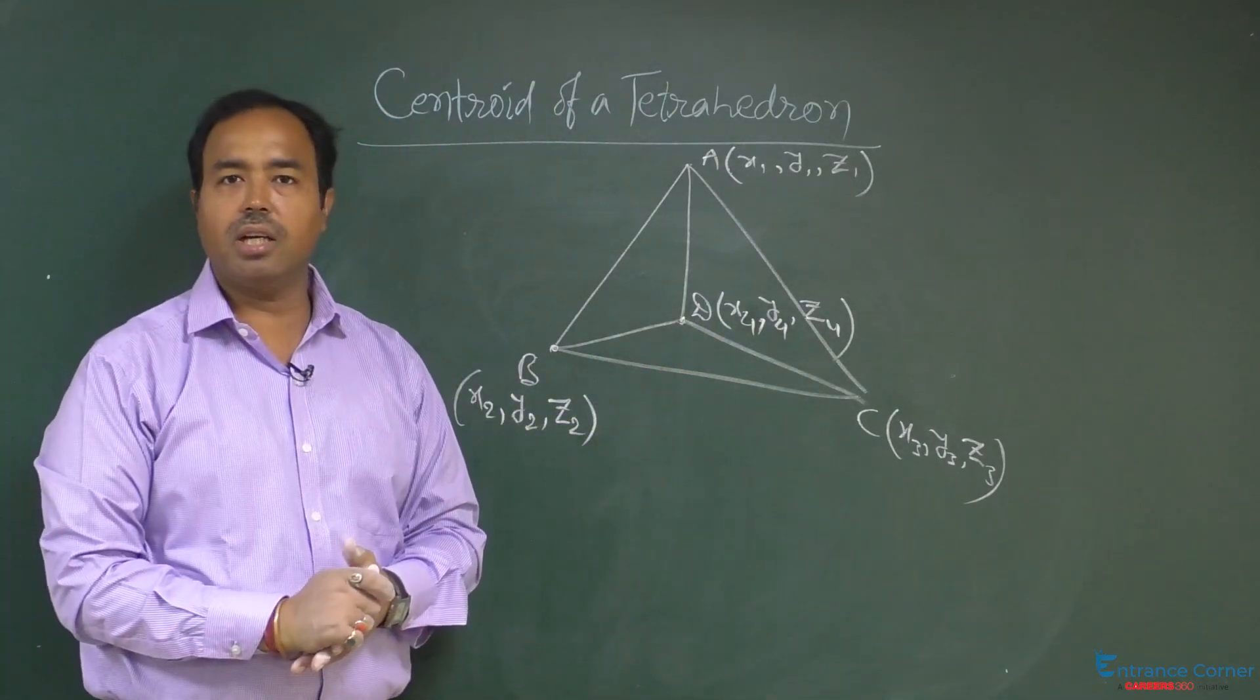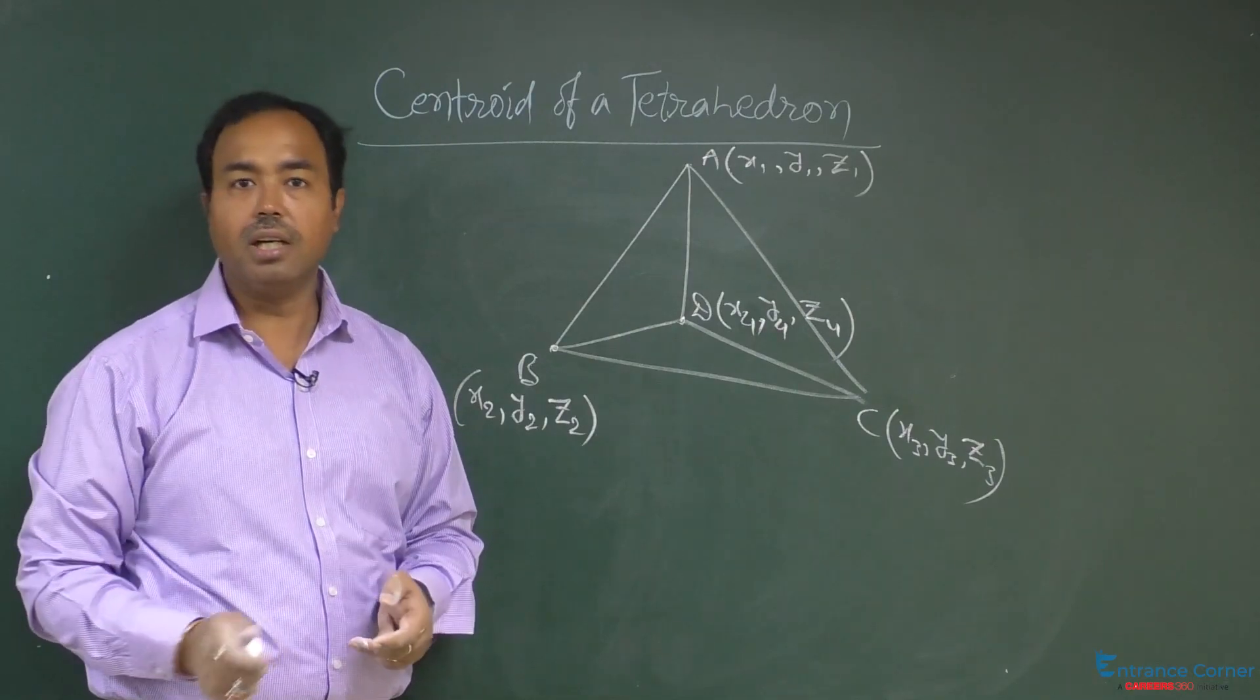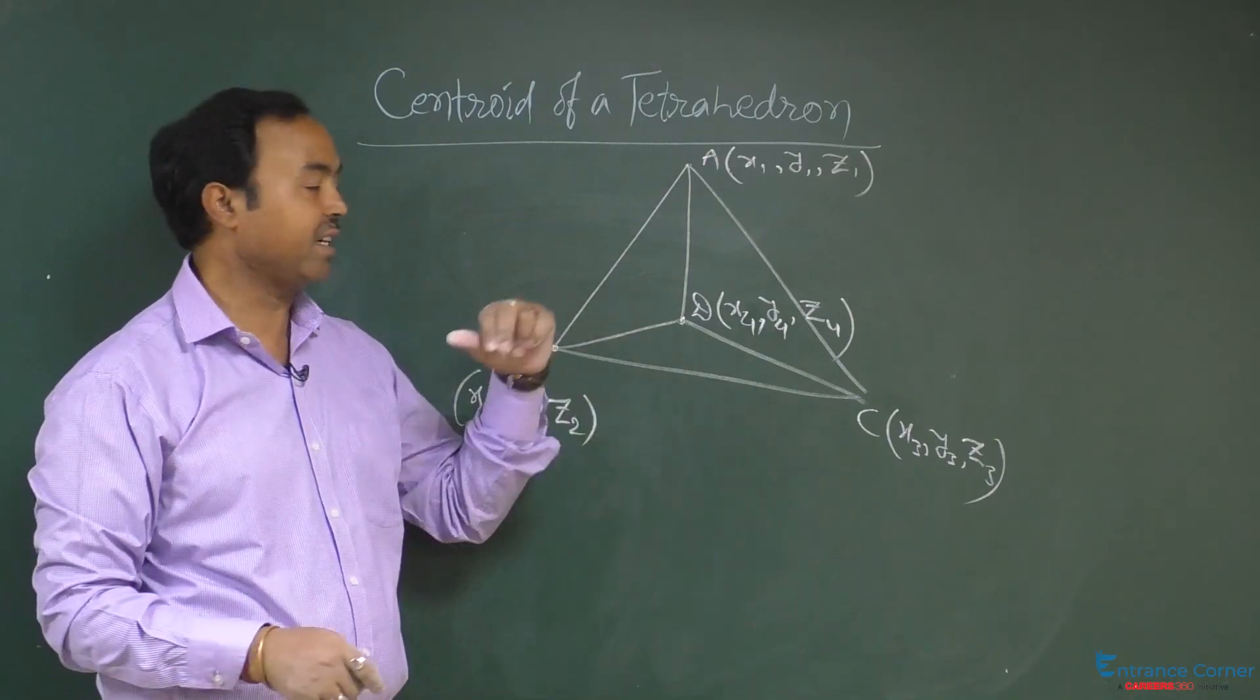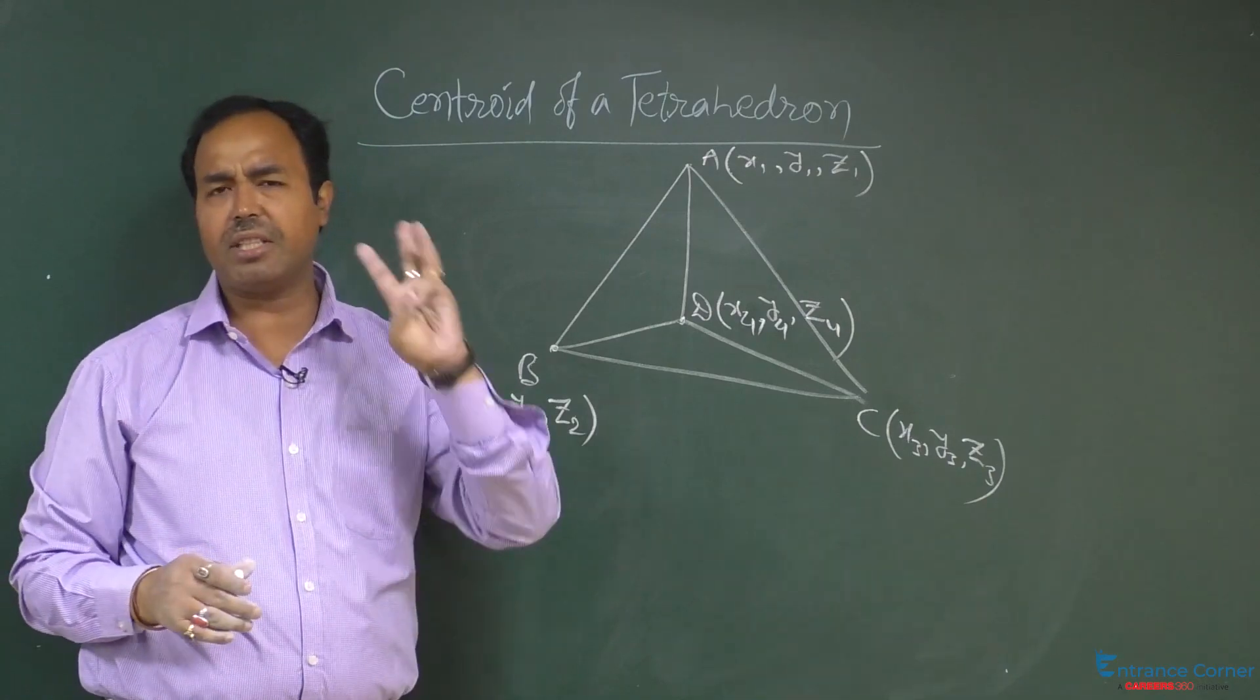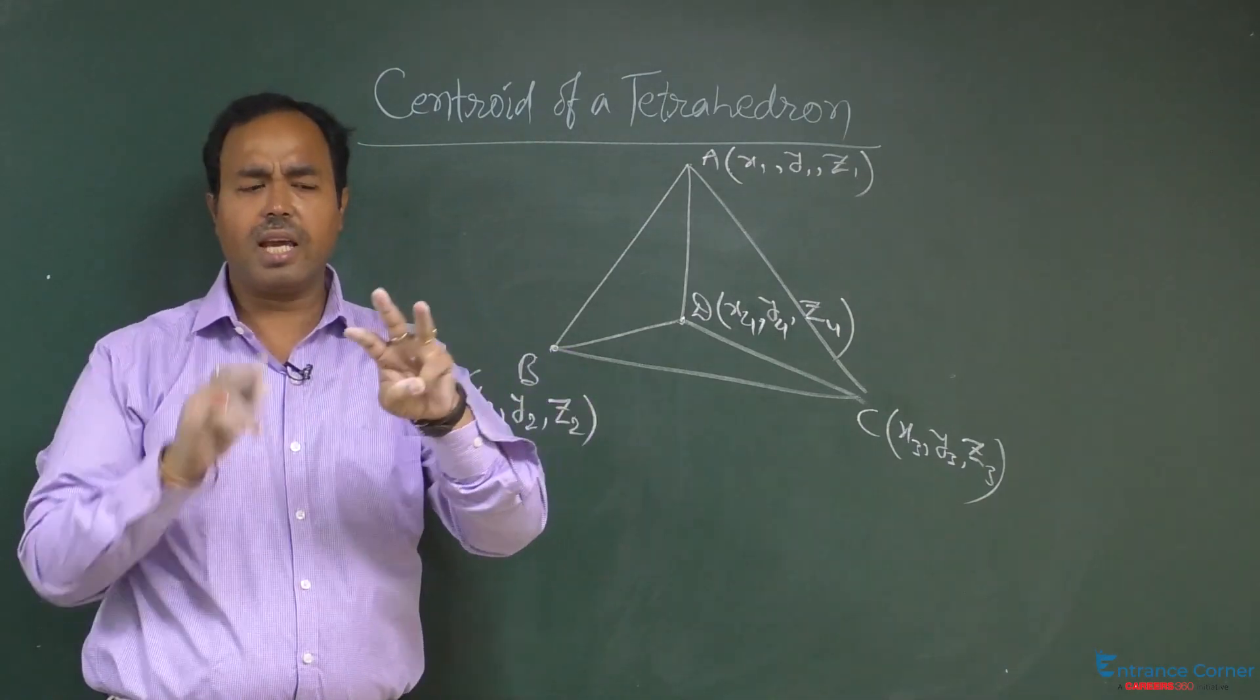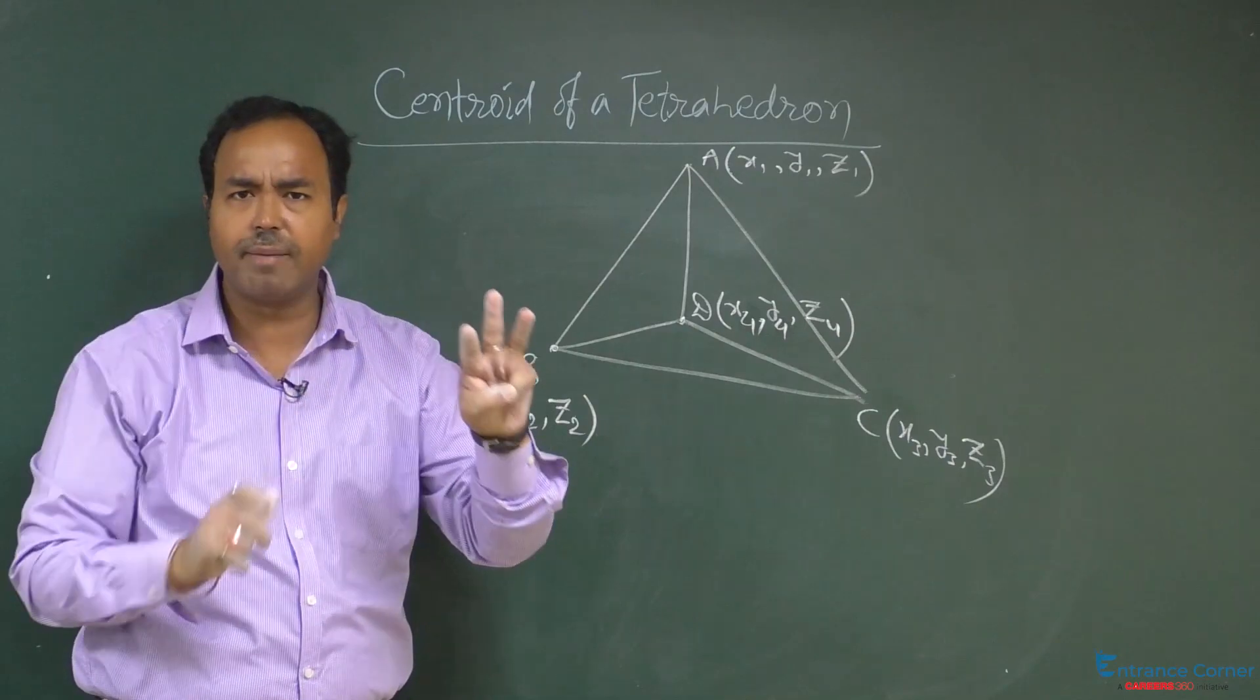Now, here you have to find out the centroid of this tetrahedron. Centroid of the triangle having three vertices is (x1 + x2 + x3) divided by 3.